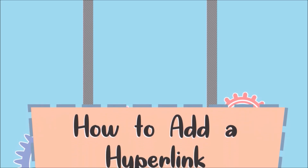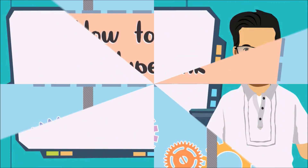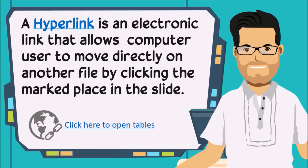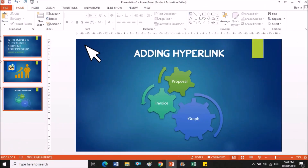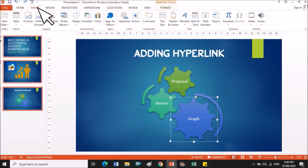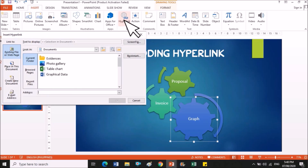The next thing we need to learn is how to add a hyperlink. What is a hyperlink? A hyperlink is an electronic link that allows a computer user to move directly to another file or document by simply clicking a marked place on your slide. To do it: first, click on the object on your slide which you want to be the marked place, then go to the Insert tab and click the Hyperlink button. Choose a file or document that you want to show after clicking the marked place.